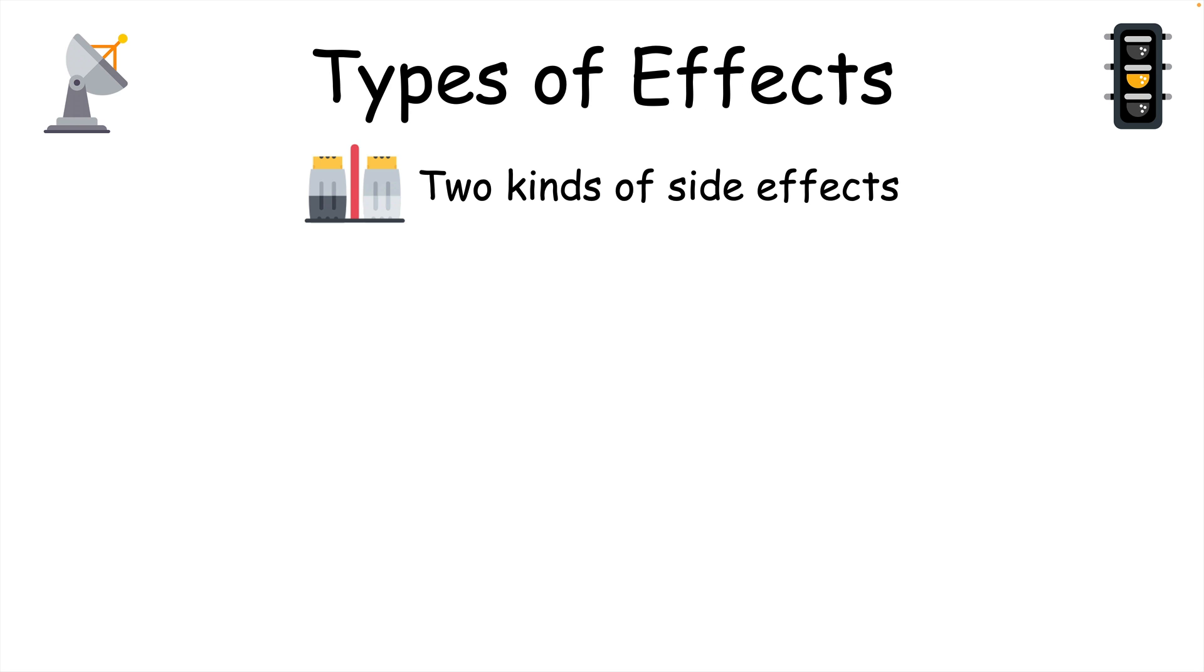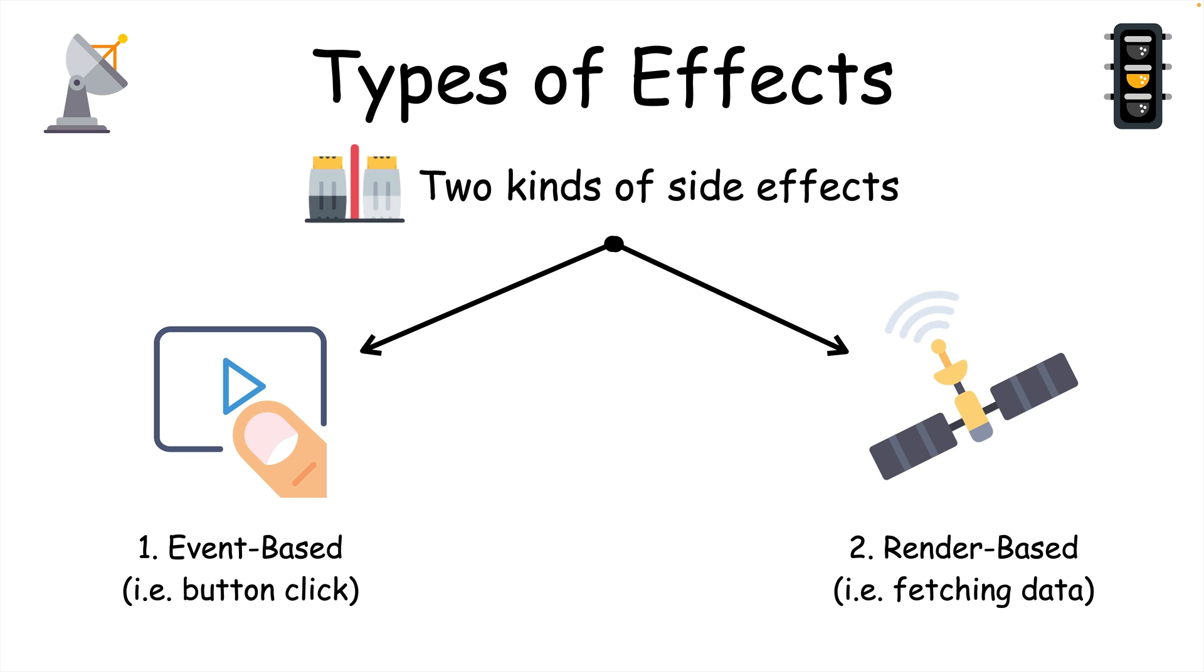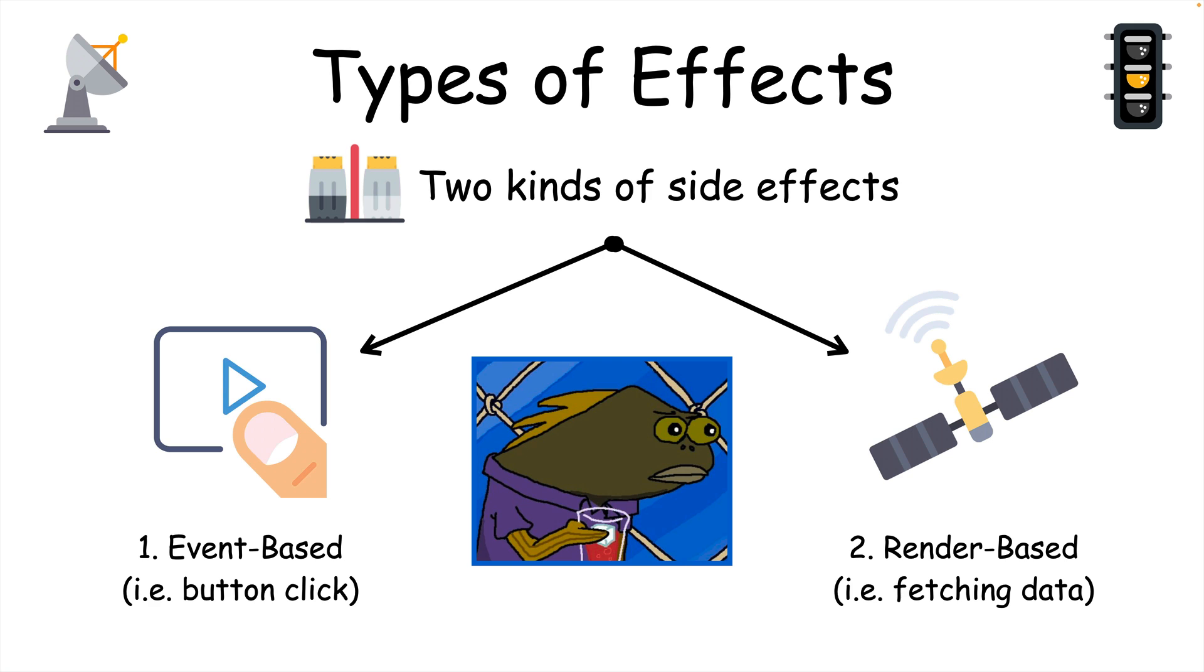Let's take a look at two types of side effects. Event-based side effects, which run when some event takes place, like a button click. And render-based side effects, which is a side effect which runs after render, such as fetching data. And it may surprise you, but useEffect really shouldn't be used for either type.